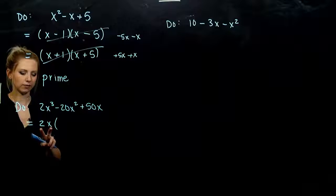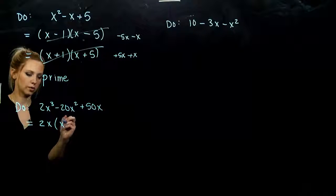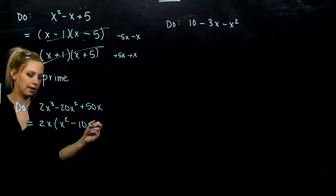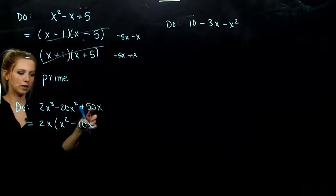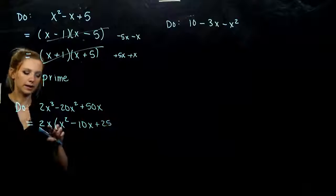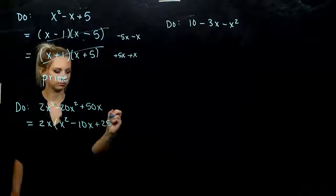The lowest power is what we can take out of everything. And when we do that, what are we left with? I'm left with an x squared minus 10x. And when I take 2 out of 50, I'm left with 25. And x out of x, it will be gone.